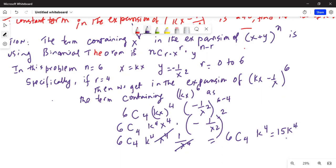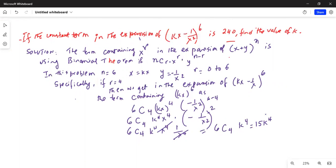So this becomes equal to 15k^4. Now the value of the constant term is given - if you look up in the problem, the value of the constant term is 240. 15k^4 is the constant term because it does not contain any expression with x. Constant term equals 15k^4 which is given equal to 240.